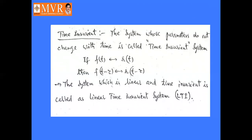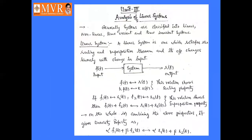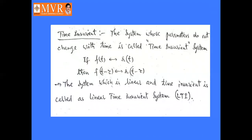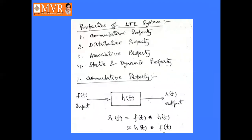A non-linear system does not satisfy the scaling and superposition theorems. The four properties of linear time invariant systems are: cumulative property, distributive property, associative property, and static and dynamic property.